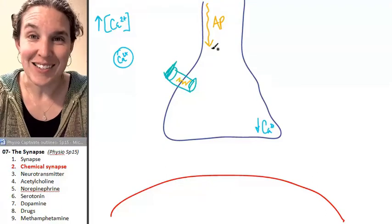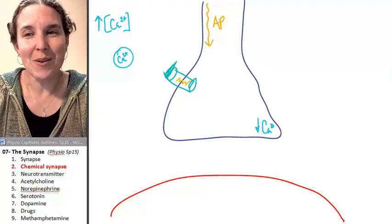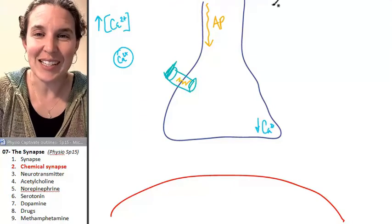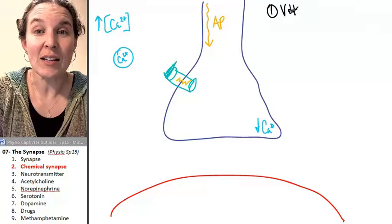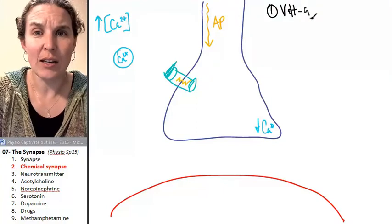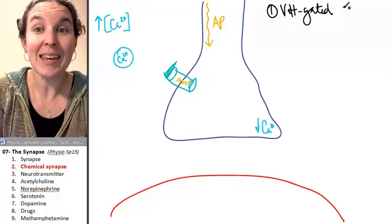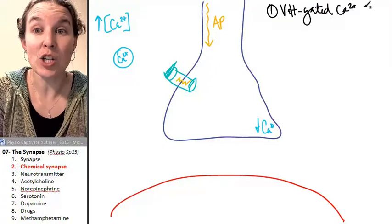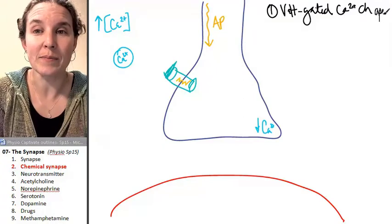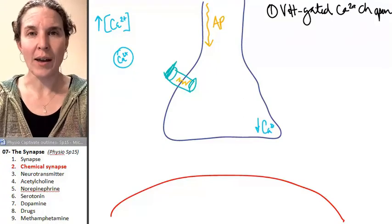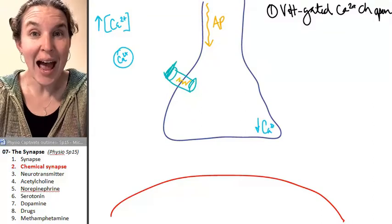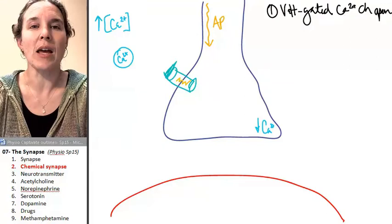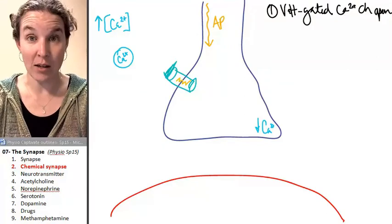So here comes the action potential. You know where this is going. The first thing that happens is that voltage-gated calcium channels open. Why? The membrane potential just changed. The action potential arrived and caused the opening of these calcium channels.